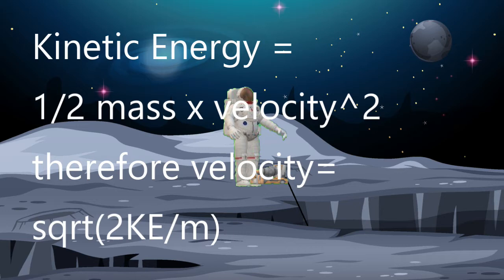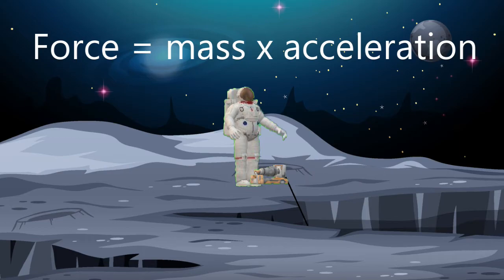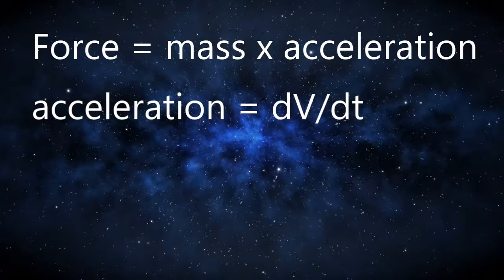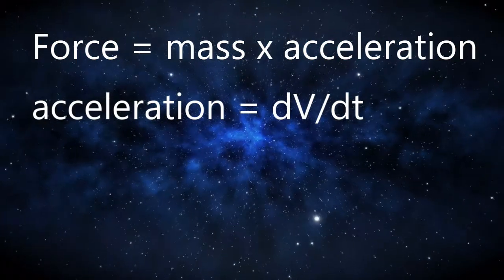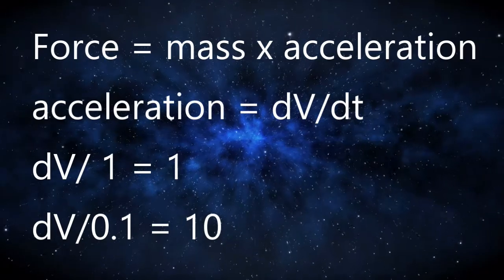How much force will the boulder impact with? That is determined by how long it takes to stop. Force equals mass times acceleration, and acceleration equals change in velocity over change in time. If the boulder stops in one-tenth the time, the force imparted is ten times more. The deformation and heating of the impacted ground are also factors. A vehicle bumper or an airbag can be so effective because spreading a change in momentum over a longer time dramatically reduces the force imparted.